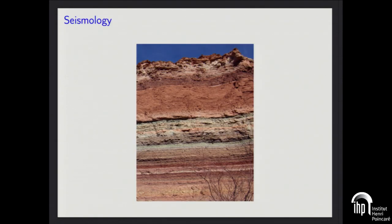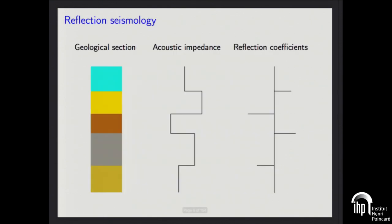One of our motivations is an application in seismology, where you want to find out what layers there are underneath the Earth's surface. There's a technique called reflection seismology, where the idea is to estimate the acoustic impedance of the different layers, or equivalently the reflection coefficients that depend on the difference between acoustic impedances at the interface between two layers. If we manage to find this, we will know what's underneath — oil, water, or whatever.